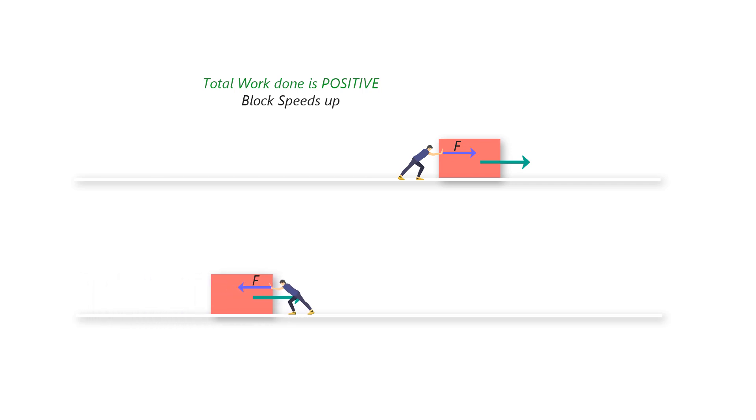If you push to the left on the moving block, the net force on the block is to the left, and the total work done on the block during a displacement S is negative, and the block slows down.